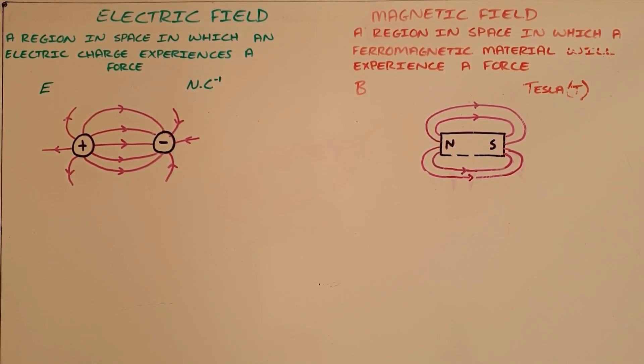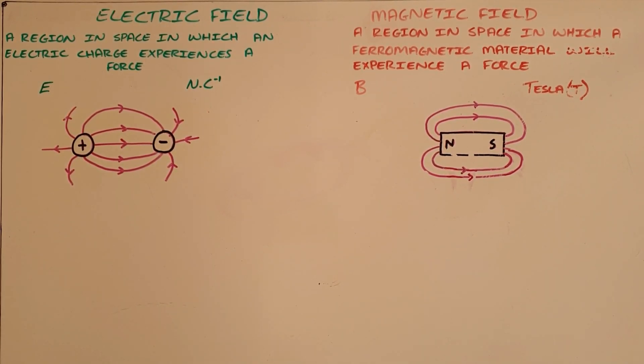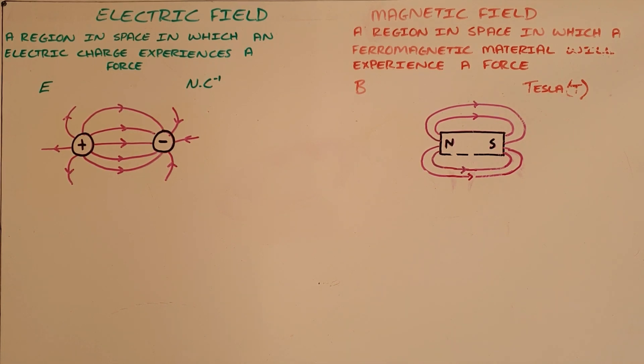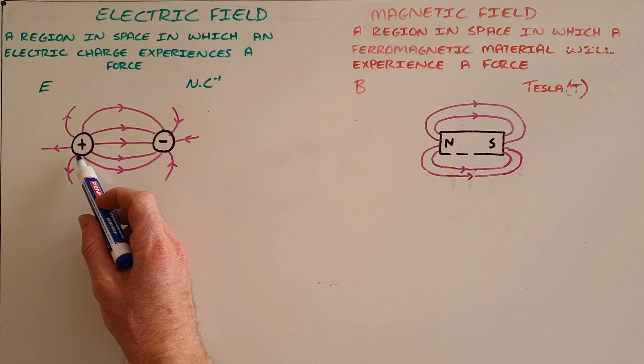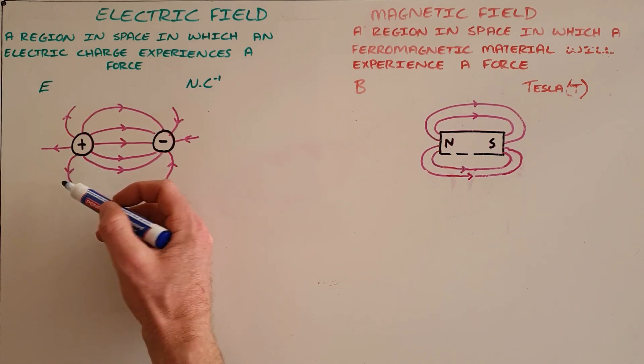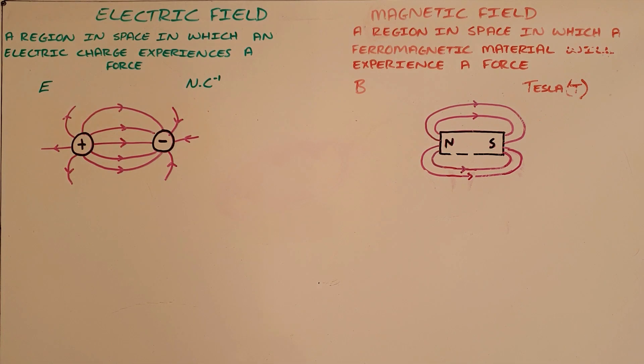We have learned about electric fields and magnetic fields in isolation, where an electric field is a region in space in which an electric charge experiences a force. It has the symbol uppercase letter E, measured in newtons per coulomb, and electric field lines are always drawn or directed from the positive charge towards the negative charge.